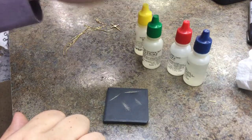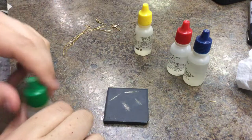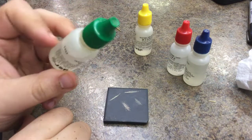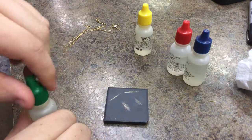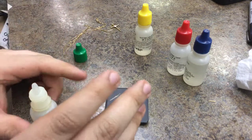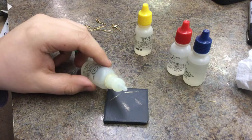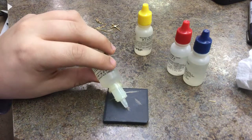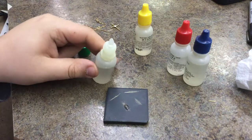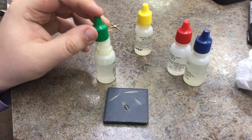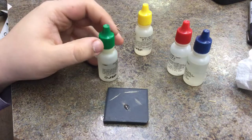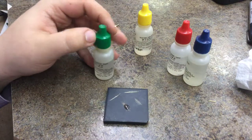So this is 14 karat gold acid, 14 karat grade acid. When you're testing for 10 karat gold, what's going to happen here, you'll see, is the line is pretty much going to be slowly but surely eaten right up. That just basically means there's some gold in there, but not a lot, not as much as we're testing for.